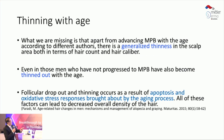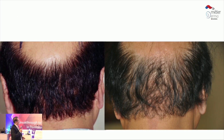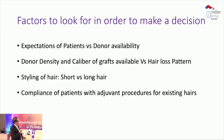There is a generalized thinning out because of apoptosis, oxidative stress, and stress responses brought by the aging process. This is one of my patients who came back to me after 10 years — see the strip method result and see how much density loss has occurred.